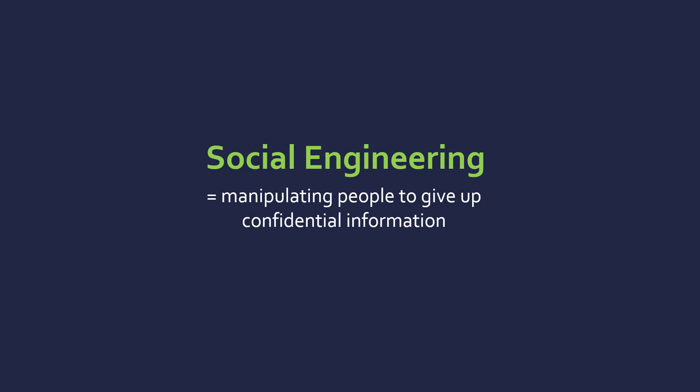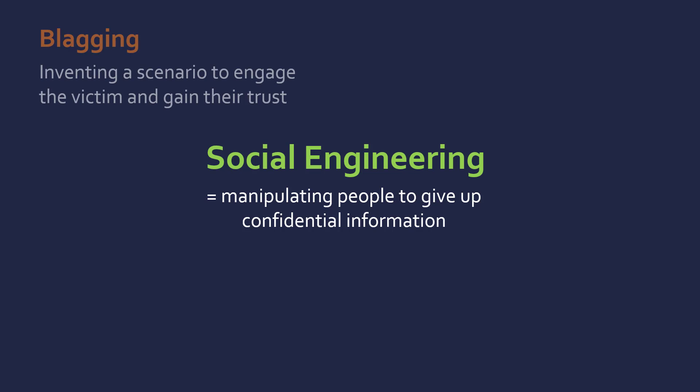We're going to look at four subcategories of social engineering. The first one is blagging — inventing a scenario to engage the victim and gain their trust. This could be the famous Nigerian prince emails trying to get you to send money, pretending to be a bank, or pretending to be a new employee at a company. It's just inventing something in order to gain trust — that's the whole idea of social engineering.